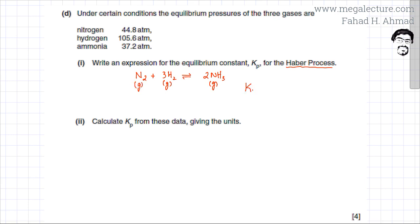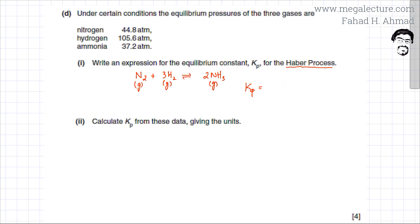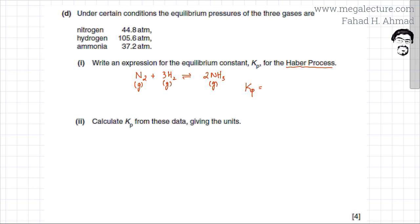Kp is the ratio of the pressure of the products divided by the pressure of the reactants. So my product, ammonia, goes in the numerator, divided by the pressure of my reactants, which are nitrogen and hydrogen.